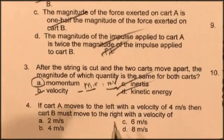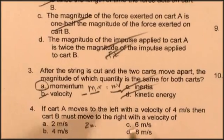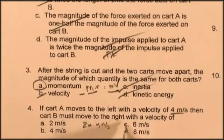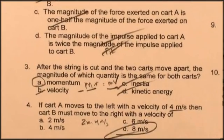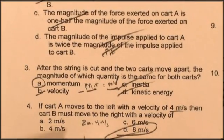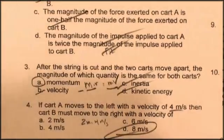If cart A, the two kilogram travels at four meters per second, then cart B must move to the right with a velocity of, well, that's got to be eight meters per second. So that two times four equals one times eight.